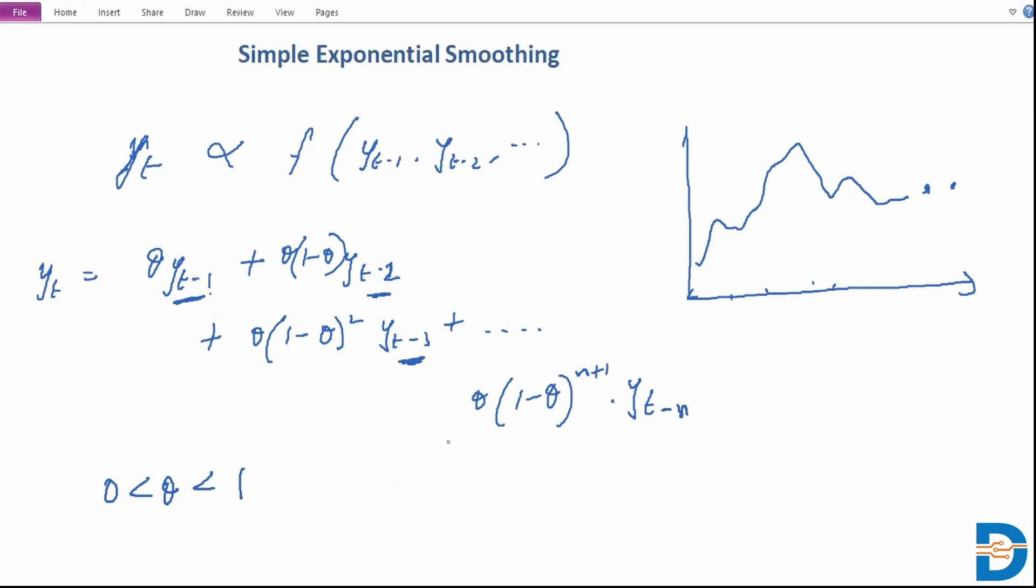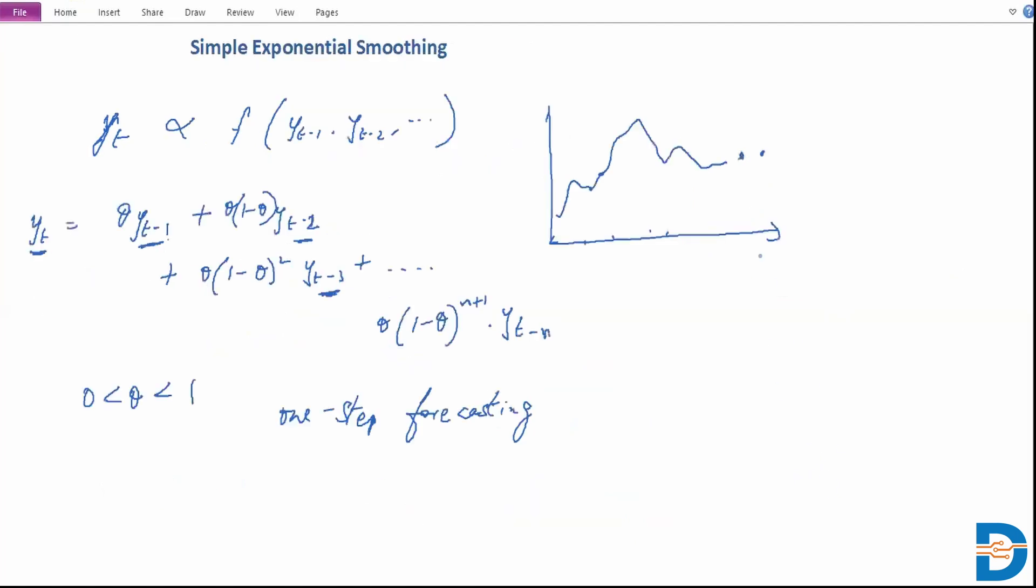This could be better written if we were to give ŷ_t as a function of y_{t-1}, because when we really come down to it, you are actually working on your forecast one by one. So this is a one-step forecasting model when you look at this particular form of exponential smoothing.